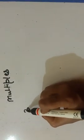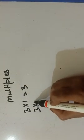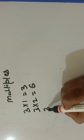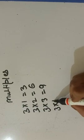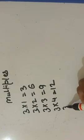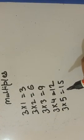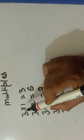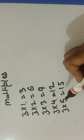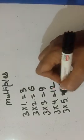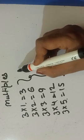So children, see: 3 multiplied by 1 is equal to 3. 3 multiplied by 2 is equal to 6. 3 multiplied by 3 is equal to 9. 3 multiplied by 4 is equal to 12. 3 multiplied by 5 is equal to 15. So children, look carefully — 3 is multiplied by 1, 2, 3, 4, 5. And these are the products of 3, so these are the multiples of 3.